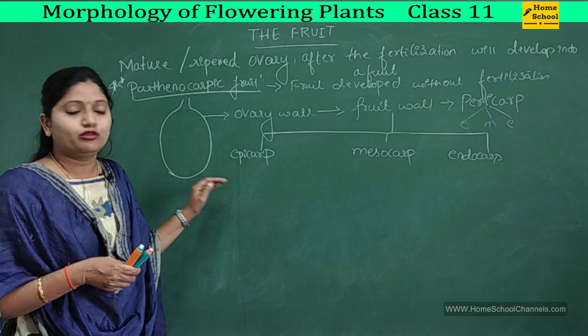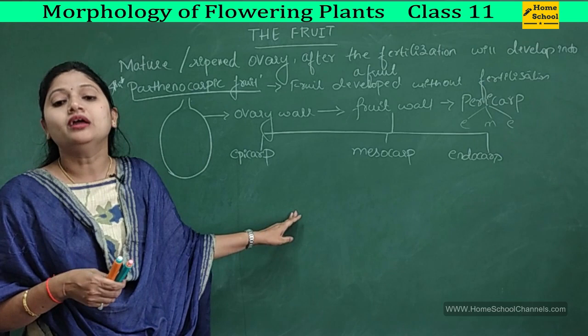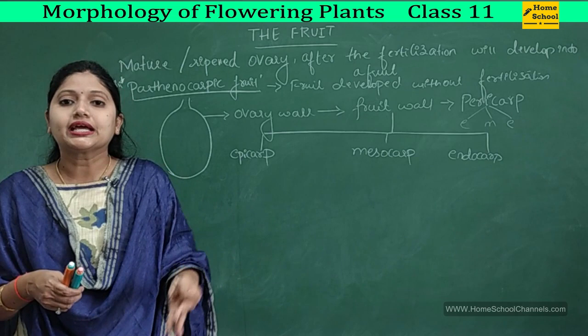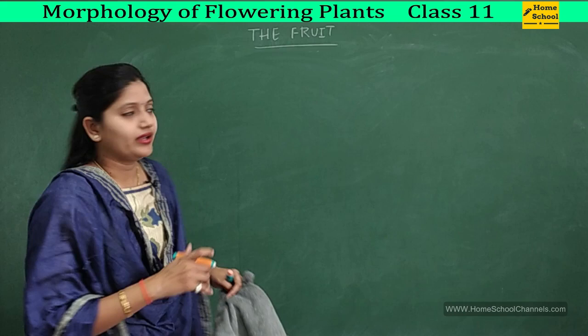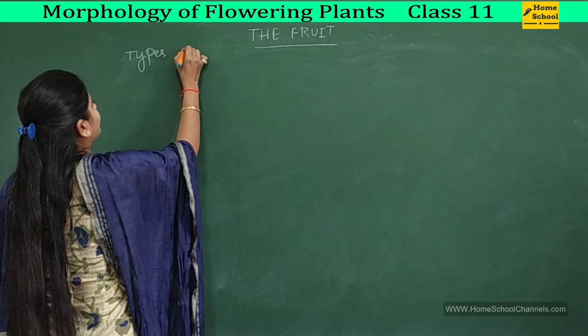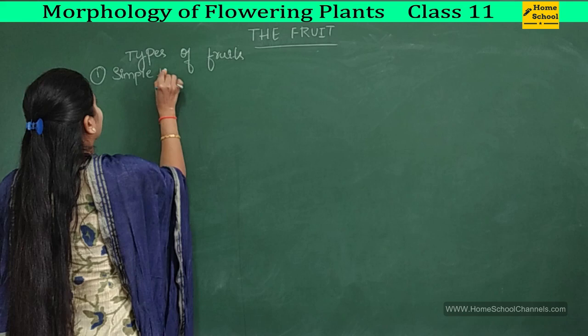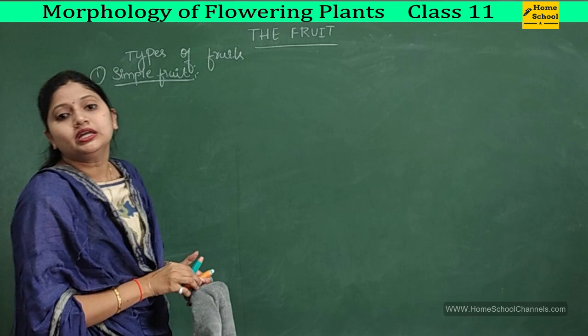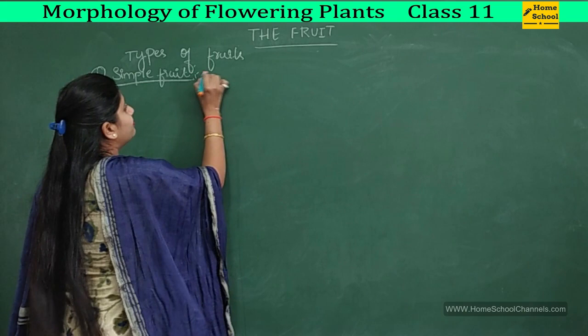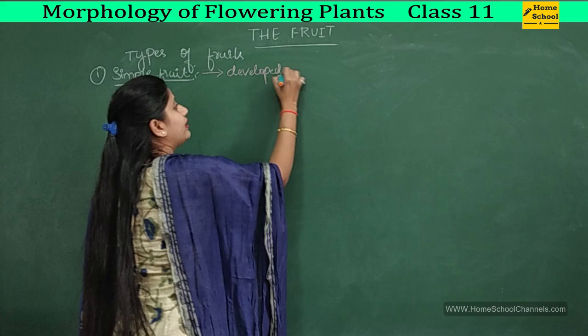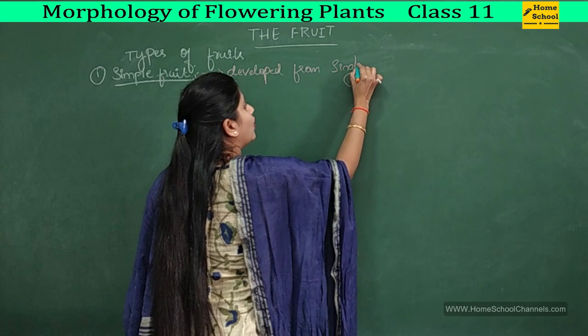Based on the nature of the fruit wall or the three walls of the pericarp, we can see a few types of fruits: simple fruits, aggregate fruits, and composite fruits. We will see them one by one. First, the simple fruit — this is mainly developed from a single ovary.